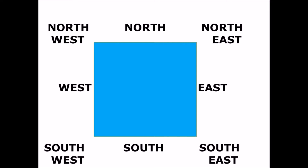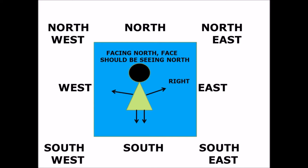North, northeast, east, southeast, south, southwest, west, northwest — eight in total. If you put it on a square, you can clearly see that the corners are northeast, southeast, southwest, and northwest. The sides are north, east, south, and west.